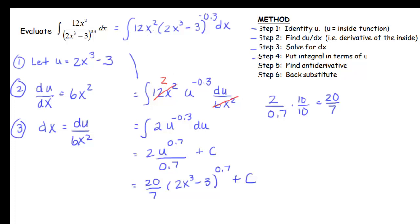So 12x² is right here. This is u so I have u^(-0.3) and then my dx I substituted that in right here. I can cancel the 6x² and I have a factor of 2 left. I have my u^(-0.3) du. Now I'm ready to do step 5.